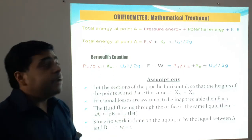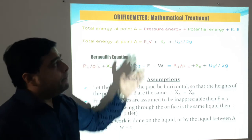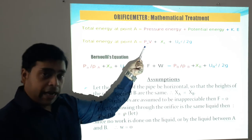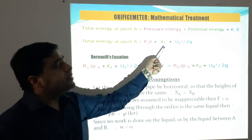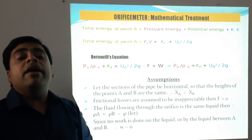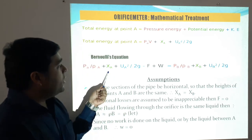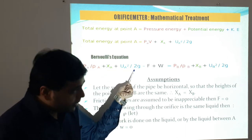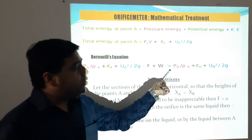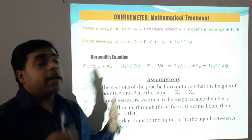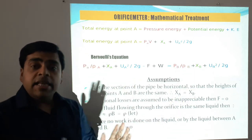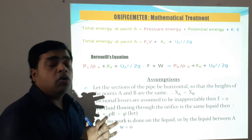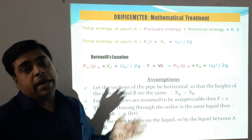Now for the mathematical treatment: the total energy at point A is given as pressure energy plus potential energy plus kinetic energy, which in mathematical terms is PAV + XA + UA²/2g. This comes directly from Bernoulli's equation: PA/ρA + XA + UA²/2g − F + W = PB/ρB + XB + UB²/2g. Some assumptions are made to understand the mathematical equation behind the orifice method.